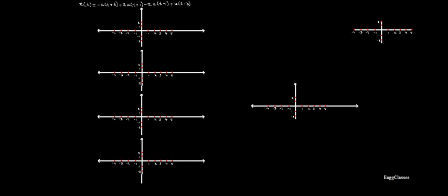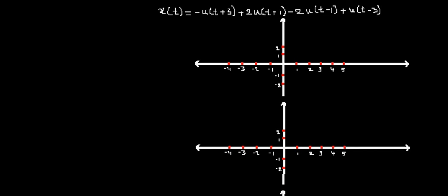Welcome to NG Classes YouTube channel. In this video we will consider the operations on signals. The task is to sketch the given signal x(t), which is x(t) = -u(t+3) + 2u(t+1) - 2u(t-1) + 2u(t-3). Before we actually consider sketching this signal, we must understand what the signal u(t) is.